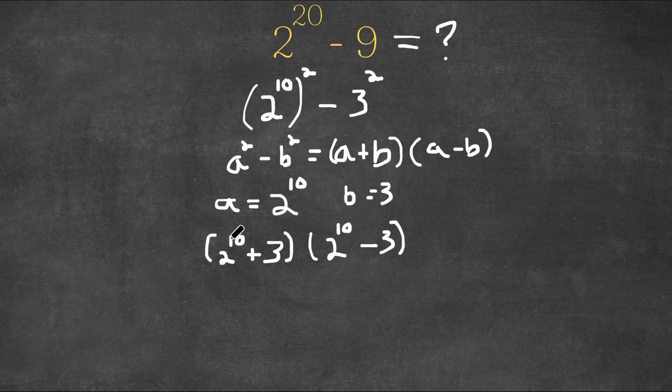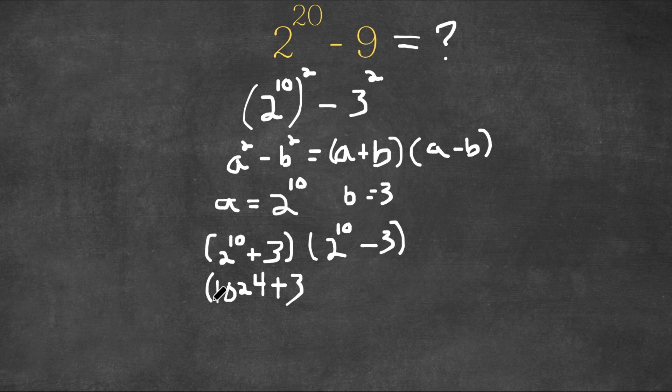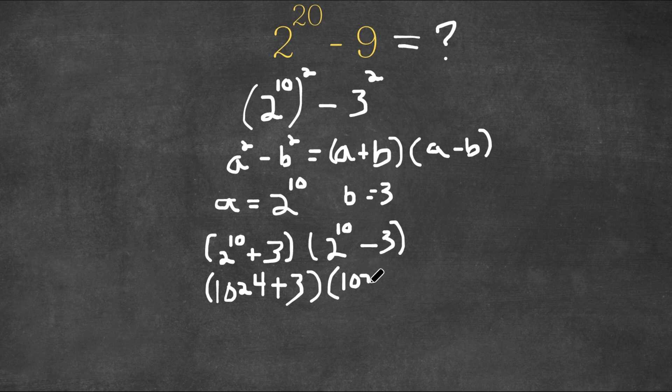Now 2 to the power of 10 is 1,024, and we still have our plus 3. And now we have 1,024 minus 3.